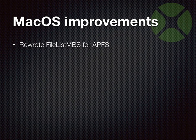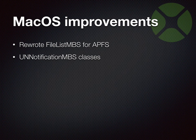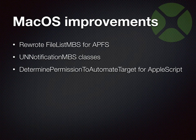We have improvements for macOS, including updates to the FileList MBS class — our class to quickly list files on Mac, Windows, and Linux. We got the UNNotification classes — the newer Apple framework to show notifications to users. We have a function to determine whether you have permissions to control another application via Apple Events, letting you check if the warning dialog would appear. You can also request the dialog to show up immediately, which is useful.